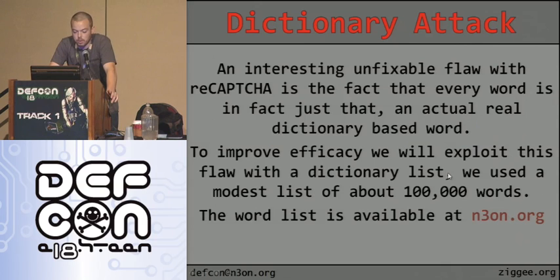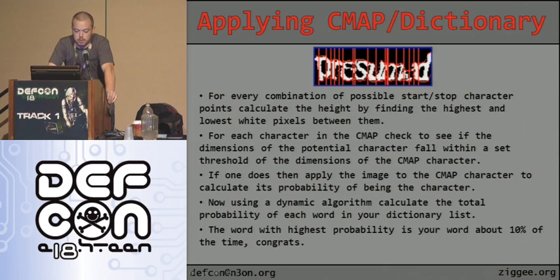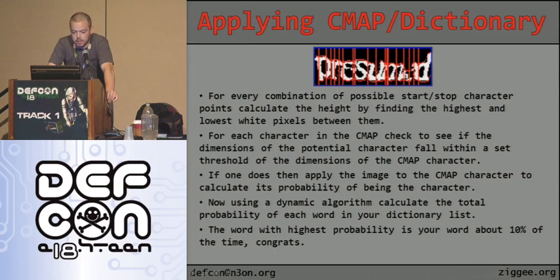An interesting unfixable flaw in reCAPTCHA is that every word is an actual dictionary word, which we can exploit with a dictionary list of around 100,000 words. To apply the cmap and dictionary attack: for every combination of possible start/stop character points, calculate the height by finding the highest and lowest white pixels. For each character in the cmap, check if the dimensions fall within a set threshold. If a 'w' is being compared against an 'i', you'd skip it due to dimension mismatch. If dimensions do match, apply the image to the cmap character to calculate its probability, then use a dynamic algorithm to calculate the total probability of each dictionary word matching the CAPTCHA.